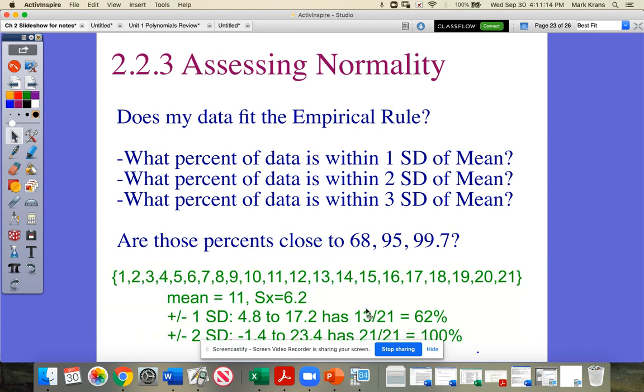And so I took a data set here. It is a uniform distribution. One to the derivative of 79 is 21. The mean is 11, standard deviation is about six. If I go plus or minus one standard deviation, we see that there's not enough there. It's a little bit low. And if we go plus or minus two standard deviations, it's a little bit high.